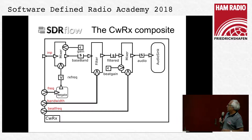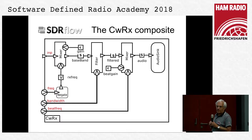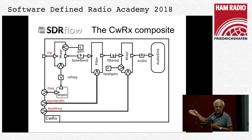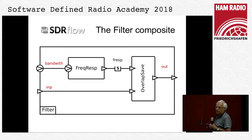The receiver is much more complicated. It starts with a mixer or frequency shifter that shifts the receiving frequency to baseband. After it, we have a filter which is a low-pass filter. The filter output will be shifted to the beat frequency, and this upshifted signal will be put into the sound card. The filter has two parts: the first part generates the frequency response of the filter, and the other part implements the overlap-and-save method filtering — more than one presentation today talks about this method.